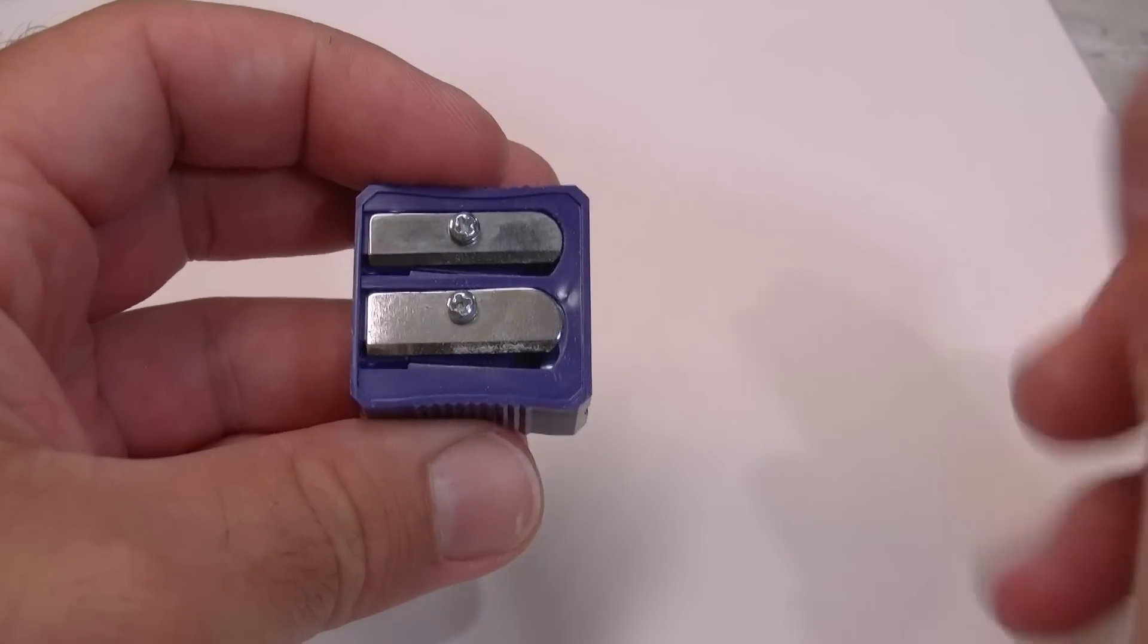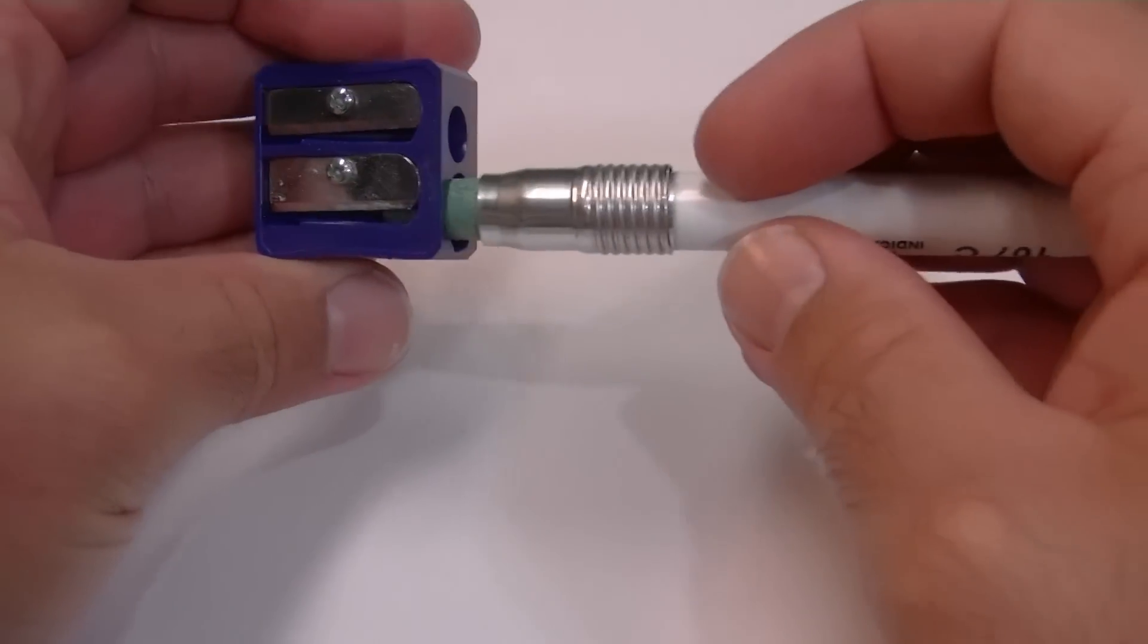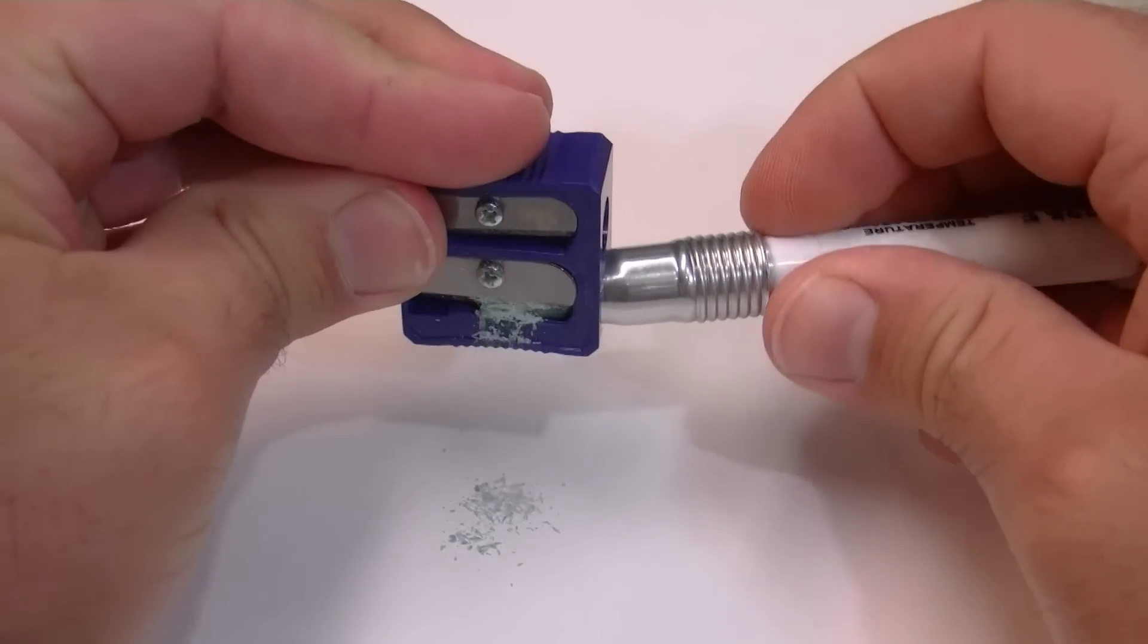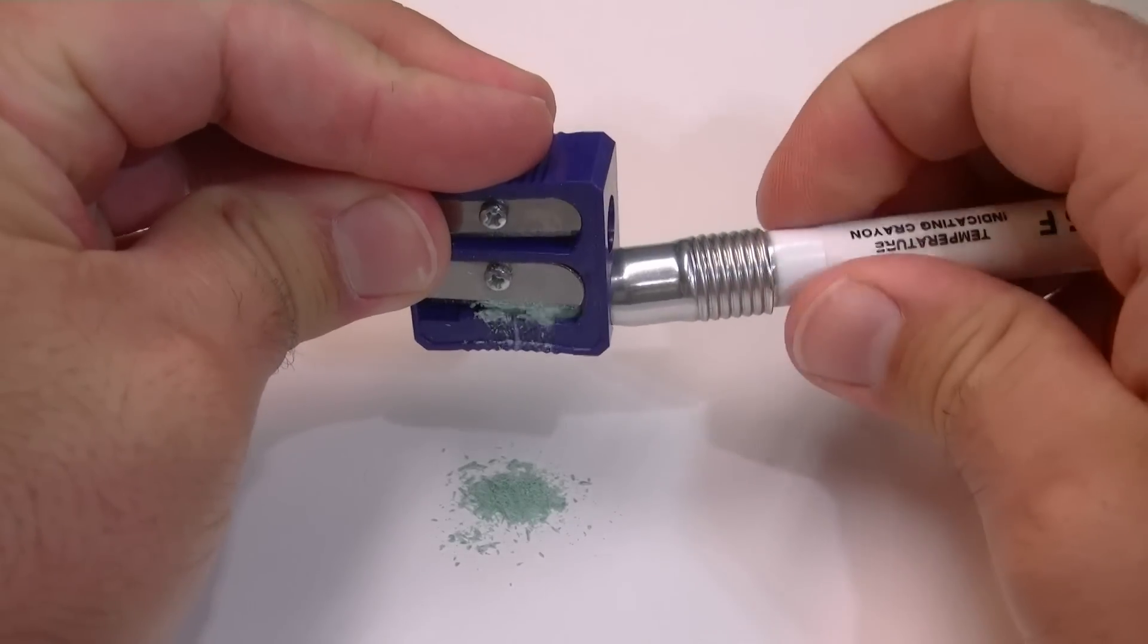As you can see we have a 225 degree Fahrenheit temperature indicating crayon. These crayons are used by labs to show the surface temperature of a device under test.